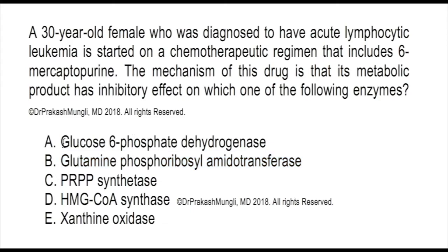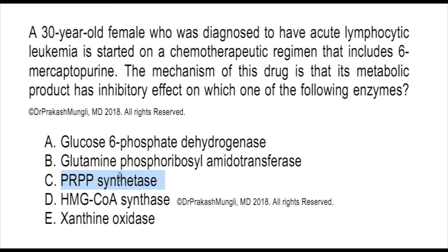Now regarding the other choices in this question: glucose-6-phosphate dehydrogenase is an enzyme in the pentose phosphate pathway and is not inhibited by 6-mercaptopurine. PRPP synthetase is involved in synthesis of PRPP and is not directly inhibited by 6-mercaptopurine. HMG-CoA synthetase is a cholesterol biosynthesis enzyme. And xanthine oxidase is an enzyme that degrades purines into uric acid.